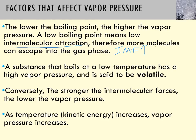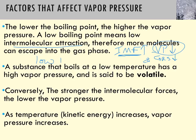As intermolecular forces get stronger, vapor pressure goes down. If there are high intermolecular forces, the molecules are very tightly held together and not very many of them have enough kinetic energy to escape, so the number of gas molecules is very low and therefore the vapor pressure is low. On the other end, a substance with low intermolecular forces is going to have a low boiling point and a high vapor pressure. The lower the boiling point, the more molecules will have enough energy to escape into the gas phase, so vapor pressure goes up.